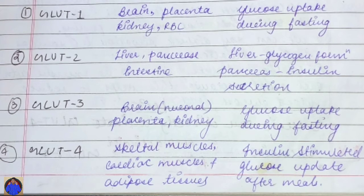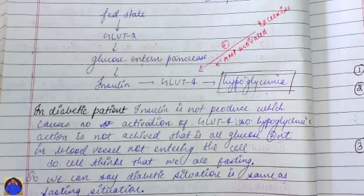In diabetic patients, GLUT4 does not activate because of insulin deficiency. This is why diabetic patients are recommended by doctors to exercise after meals — exercise activates GLUT4 through 5'-AMP-activated protein kinase (AMPK) instead of insulin. This directly activates GLUT4 via 5'-AMP, helping prevent hyperglycemia.